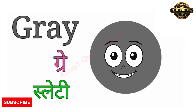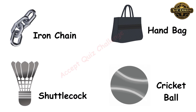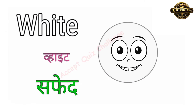This is the gray color, G-R-A-Y. Gray means slaty. Let's see the example of gray color. Iron chain is gray, handbag is gray, shuttlecock is gray and cricket ball also is gray.